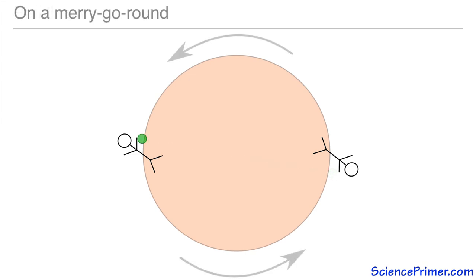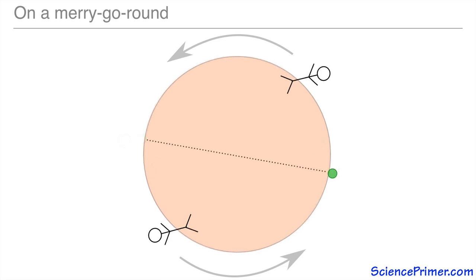If we put the game of catch on a spinning platform, things change. When the first person throws the ball, he applies a direct force on it in a straight line in the direction of the throw, and once he lets go of it, it travels in a straight line in that direction, independent of the rotation of the platform.